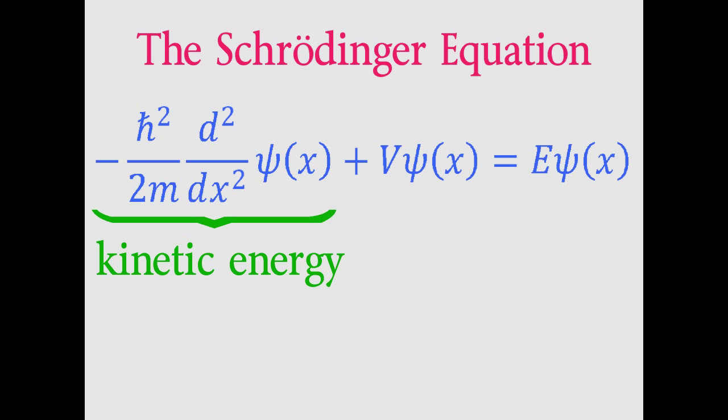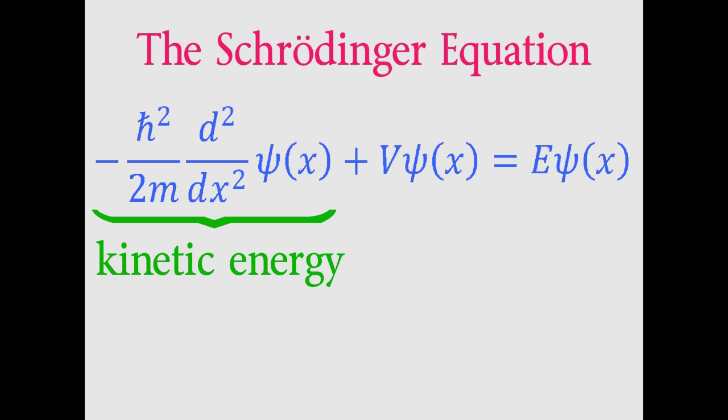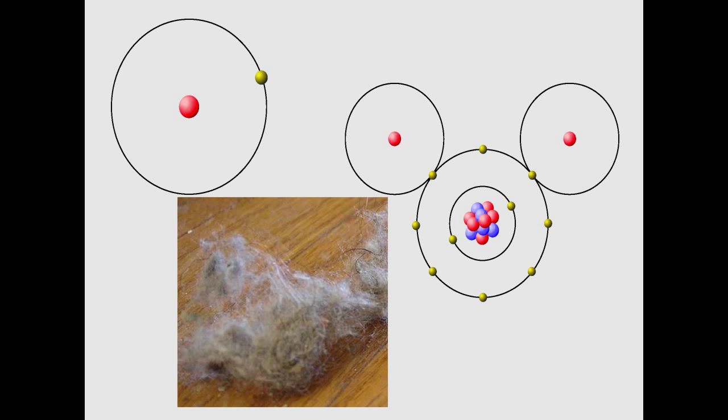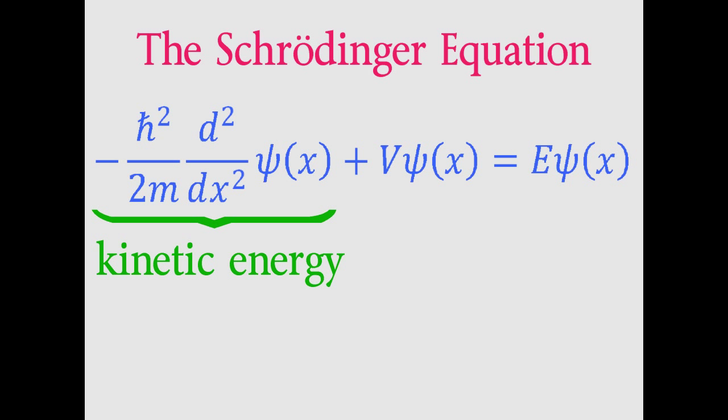The first part is the kinetic energy. Basically, it's the energy that comes from the motion of what we're studying, whether it's atoms or molecules or dust bunnies. So that part of the equation tells us how much energy comes from the movement of those things. So the first term is for the kinetic energy.